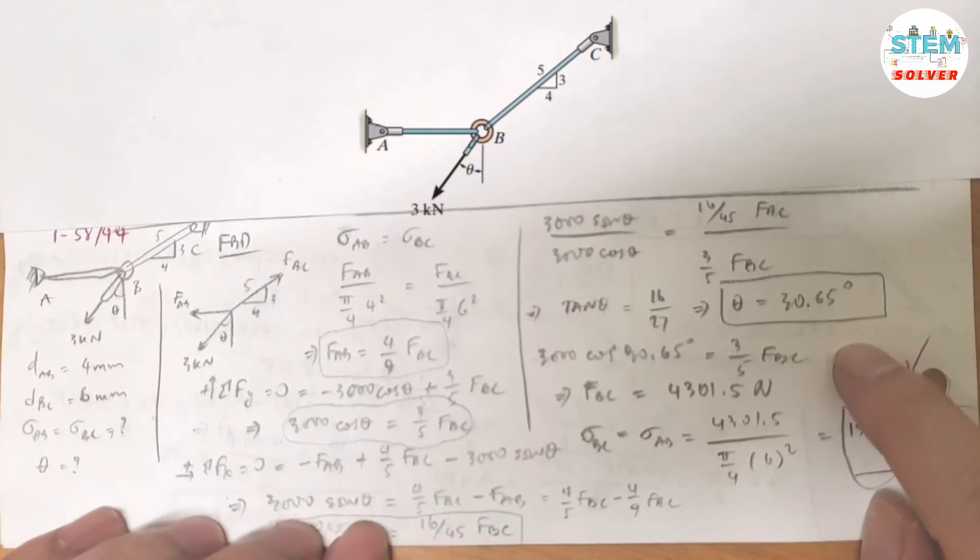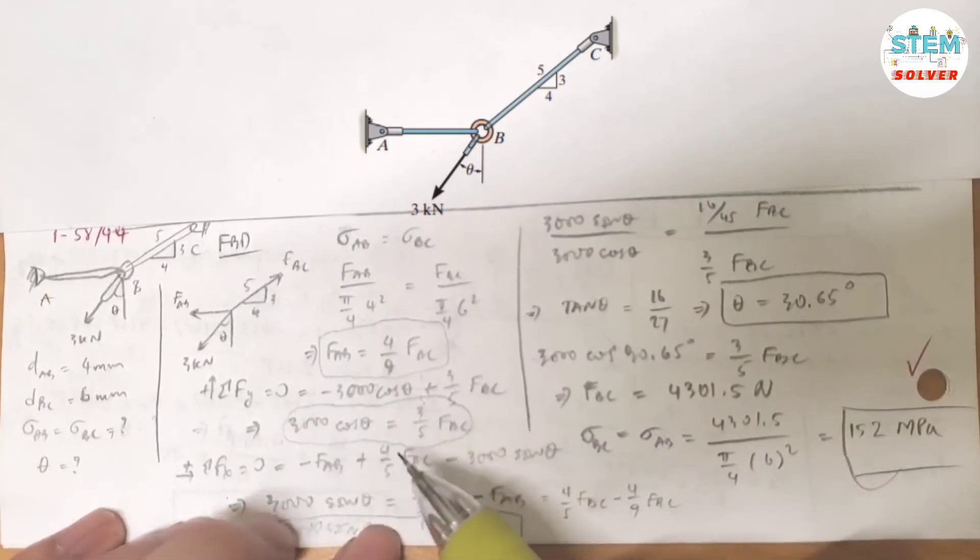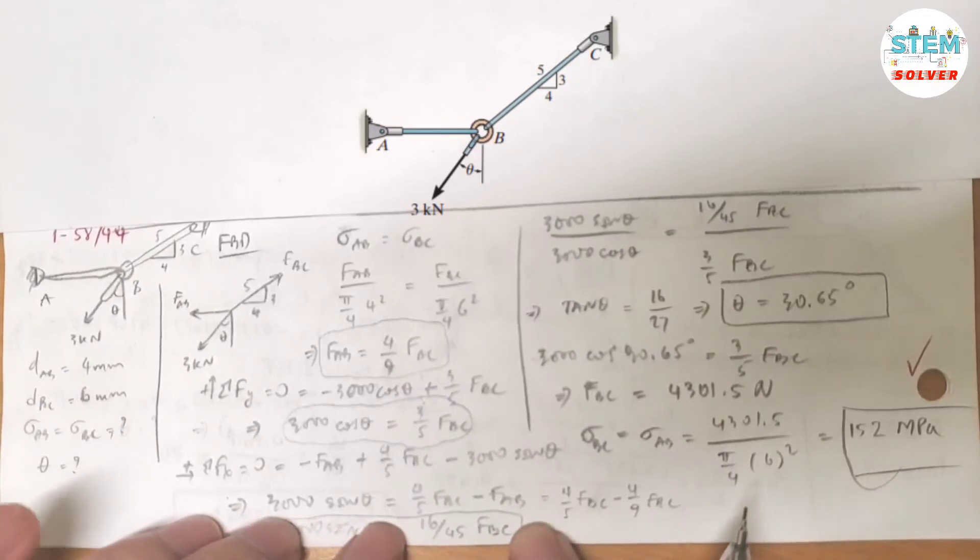Now what is the normal stress? Well, back to either one of these. So before you do that, you need to find the force in rod AB and rod BC.